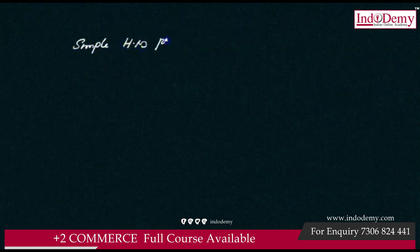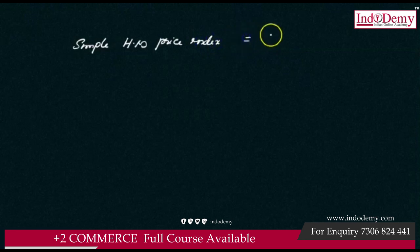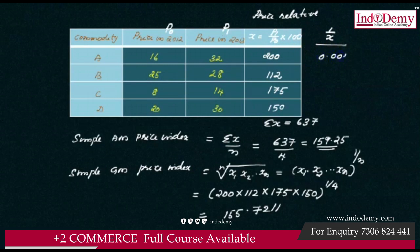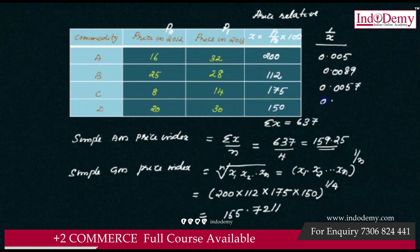For the harmonic mean price index number, the formula is n divided by summation of 1 by x. We calculate 1 by x for each price relative: 1 by 200 is 0.005, 1 by 112 is 0.0089, 1 by 175 is 0.0057, and 1 by 150 is 0.0067.